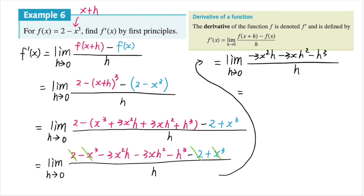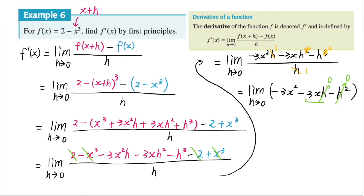Again, h is a common factor. Dividing both top and bottom by h: that becomes one, one, h, and h squared. So we have the limit as h approaches zero of negative three x squared minus three xh minus h squared. As h approaches zero, the last two terms become zero as well. So the limit of this expression as h approaches zero is negative three x squared. Therefore f dash of x equals negative three x squared — and that's our derivative.